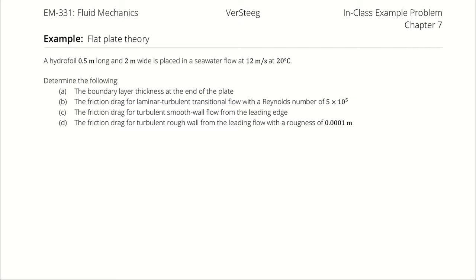A hydrofoil, half a meter long and two meters wide, is placed in a seawater flow at 12 meters per second at 20 degrees Celsius. I want us to figure out the boundary layer thickness at the end of the plate and then figure out what the drag force would be with all three variations of turbulent flow that we could consider. That is, laminar to turbulent transitional flow across the plate, fully turbulent across the entire plate if it's smooth, and turbulent rough flow for a roughness of 0.0001 meters.